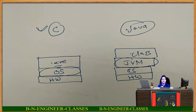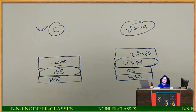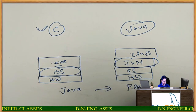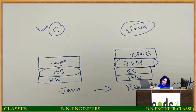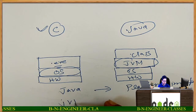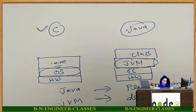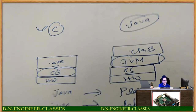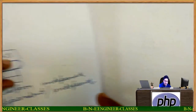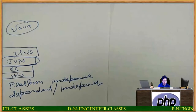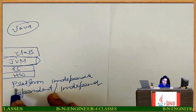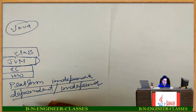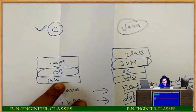Now, Java is platform independent. But there is a question: is JVM platform dependent or independent? Java is purely platform independent. But JVM is perfectly platform dependent — it is not independent. So this is the concept of platform independence in Java, C, and C++.